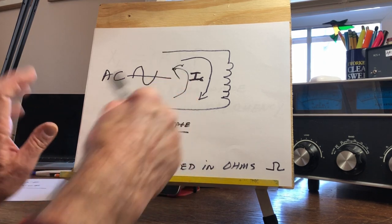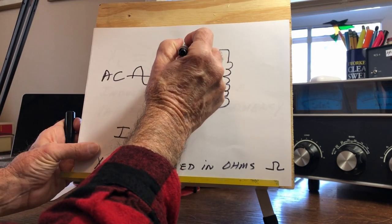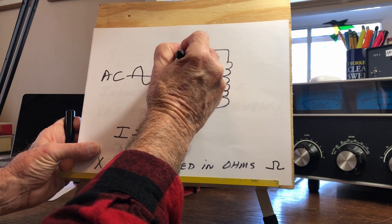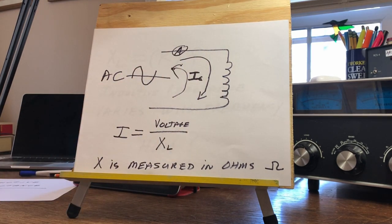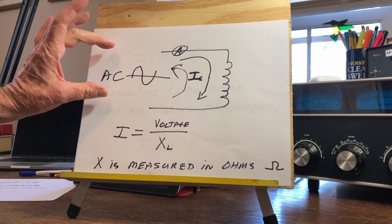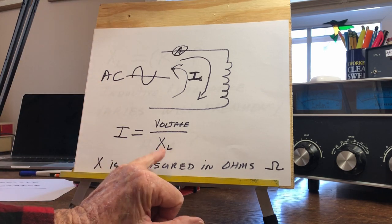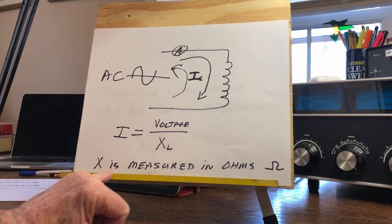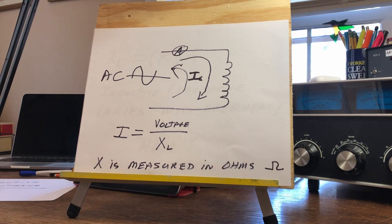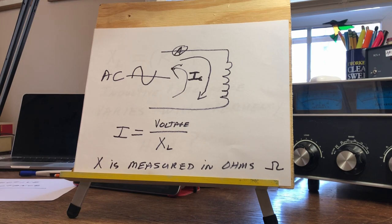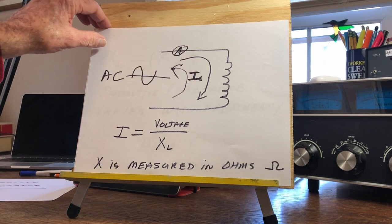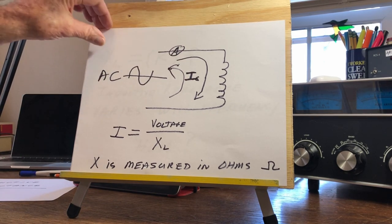If we had an AC ammeter in the circuit, the current that flows is going to be determined by the AC voltage divided by the reactance. The reactance X is measured in ohms — very similar to a resistor. We say this coil has so many ohms of reactance, and given a certain voltage we can calculate the current that's going to flow.